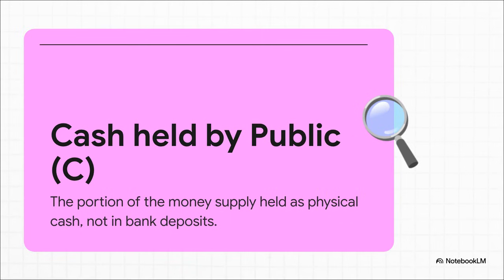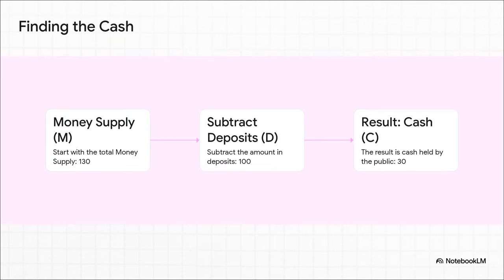We just need one final piece for our formula: the cash held by the public, or C. This is exactly what it sounds like — all the physical cash that's not in a bank, but out there in the world in wallets and cash registers. Finding this number is super simple. If the total money supply is 130 and we already know 100 of that is locked away in bank deposits, the rest has to be physical cash. So 130 minus 100 leaves us with 30 in cash held by the public.